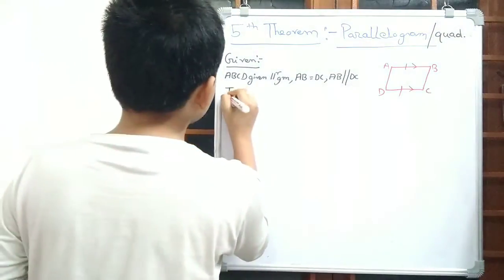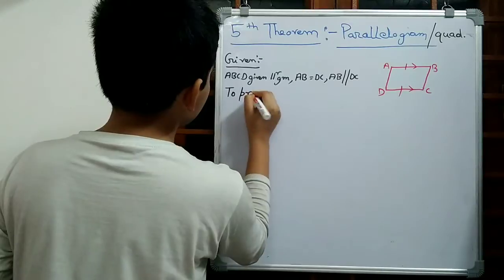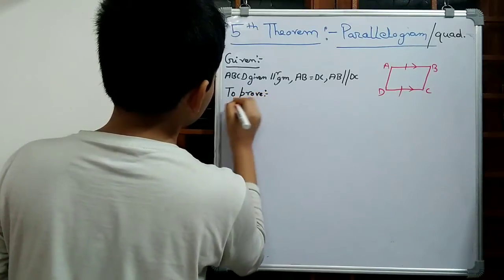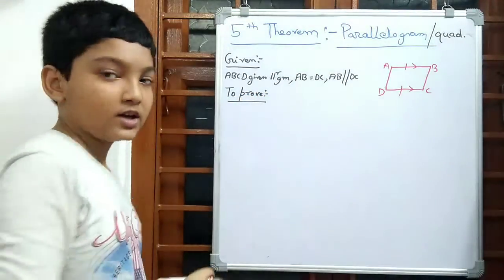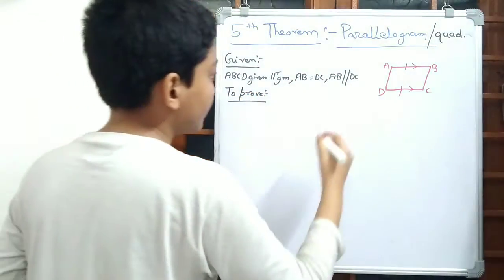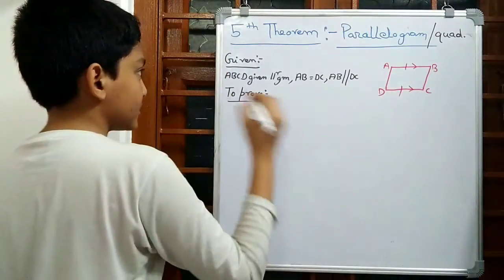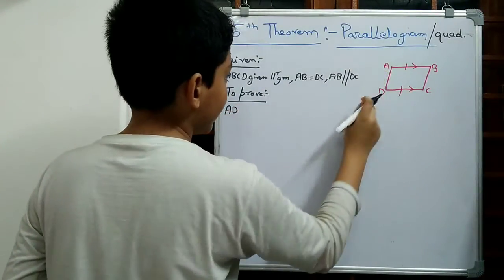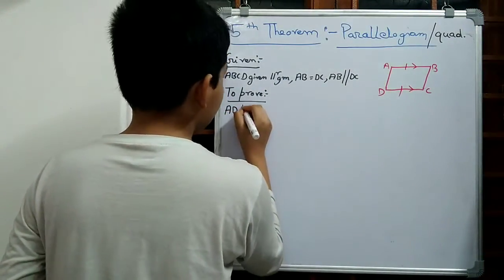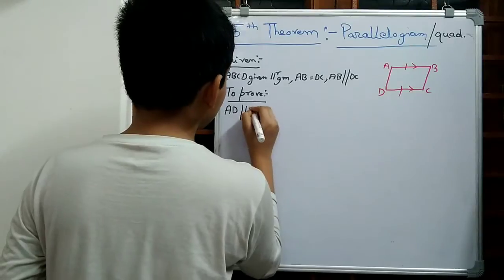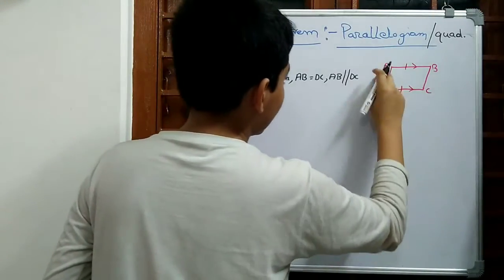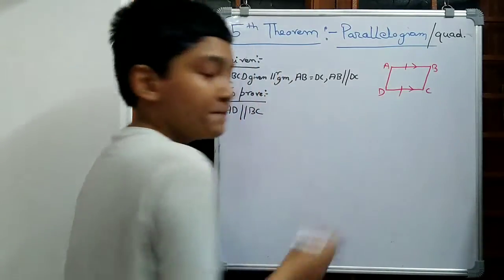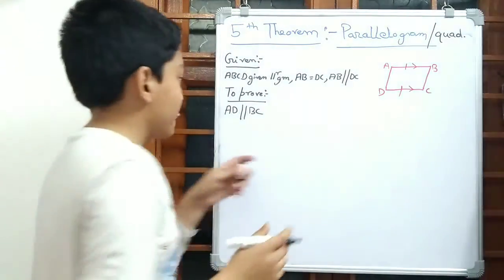So what is to be proved? To prove is that AD is parallel to BC. This is what we have to prove.